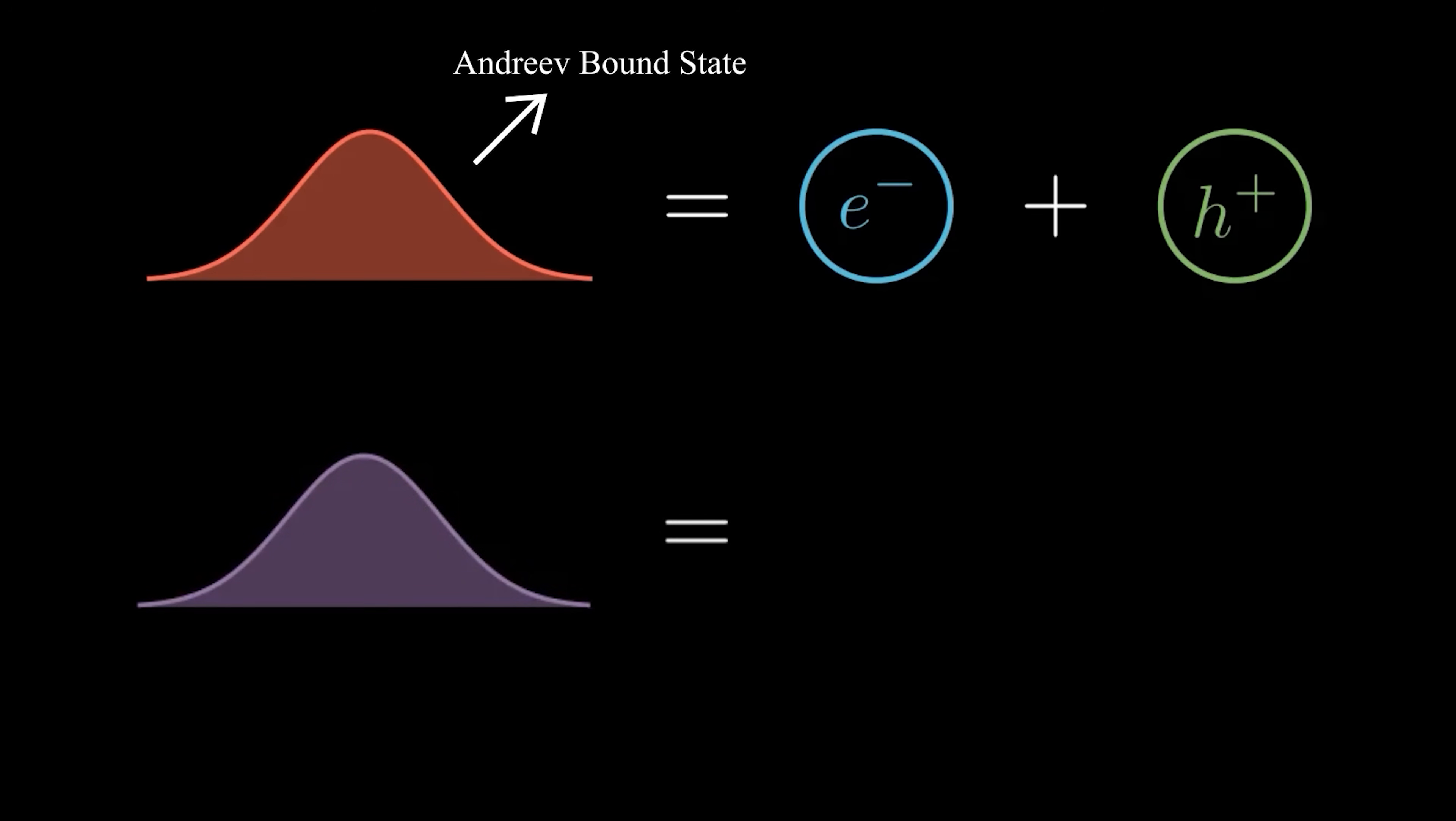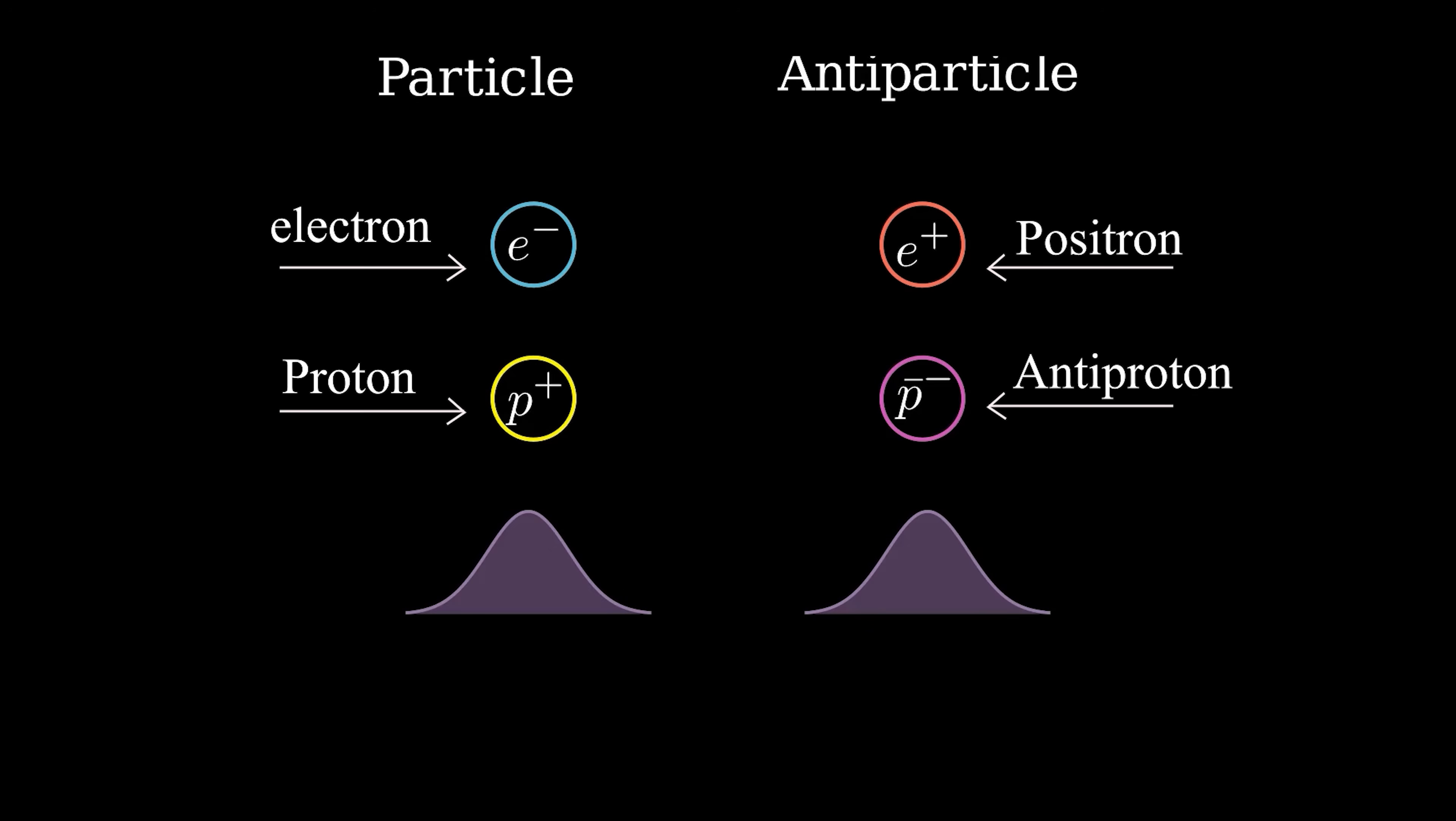This alone wouldn't be interesting, though. There is another type of state, an Andreev bound state, that is also a superposition of electrons and holes. No, the defining characteristic of a Majorana fermion is that it's its own antiparticle. Antiparticles make up antimatter, which is just like regular matter we experience in the universe day to day, except all of the particles are reversed. In antimatter, instead of there being electrons, there are positrons. Instead of protons, there are antiprotons. Each particle has its own antiparticle. When a particle and its antiparticle come together, they instantaneously annihilate, producing pure energy, released as light and heat.